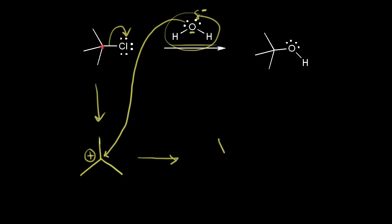The oxygen is now bonded to our carbon and still bonded to two hydrogens. The electrons in magenta form the bond between the oxygen and our carbon. We still have a lone pair of electrons left on the oxygen, and that gives the oxygen a plus one formal charge.